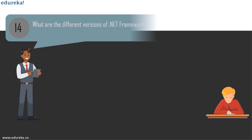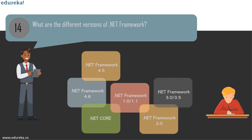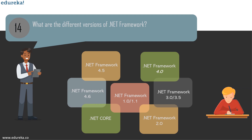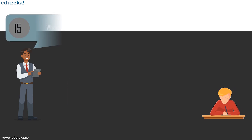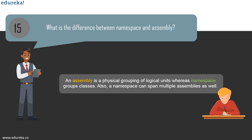Question 14: what are the different versions of the .NET framework? The first version was 1.0/1.1, which was Visual Studio .NET 2002. Then came .NET framework 2.0 as part of Visual Studio 2005. We then have .NET framework 3.0/3.5, then .NET Core as part of Visual Studio 2017, going up to 7.0. Question 15: difference between namespace and assembly. An assembly is a physical grouping of logical units, whereas a namespace groups classes. A namespace can also span multiple assemblies.